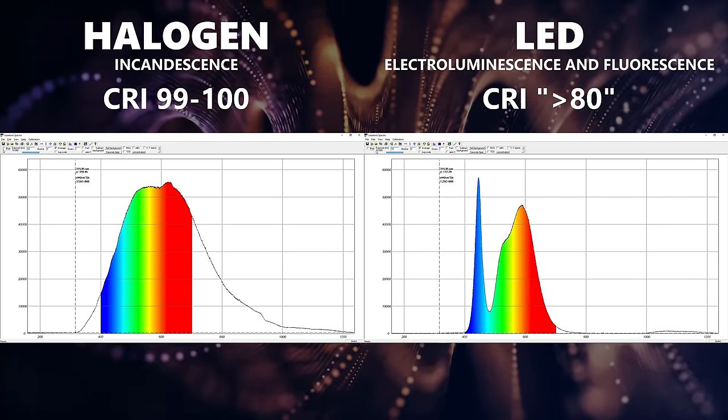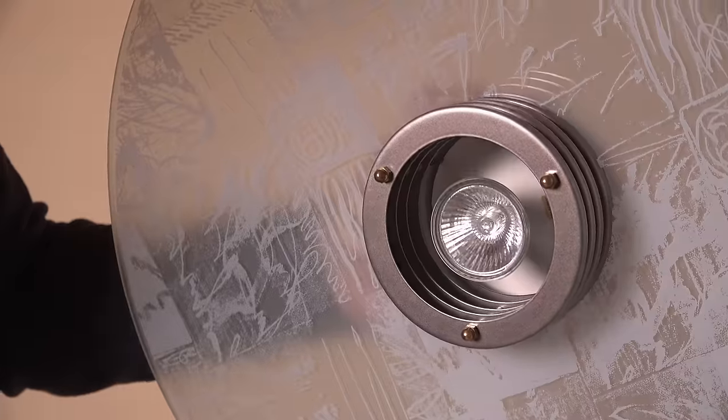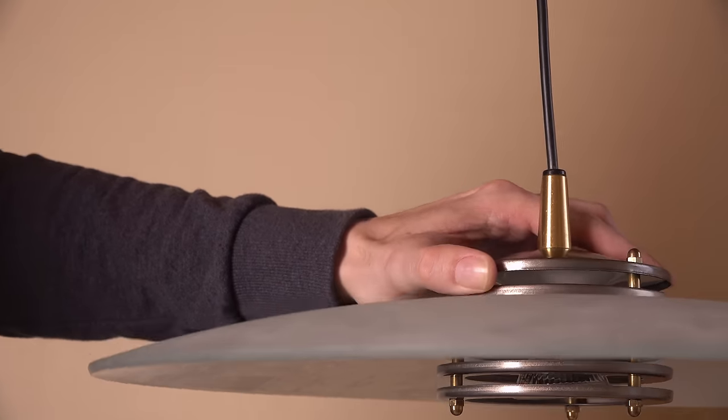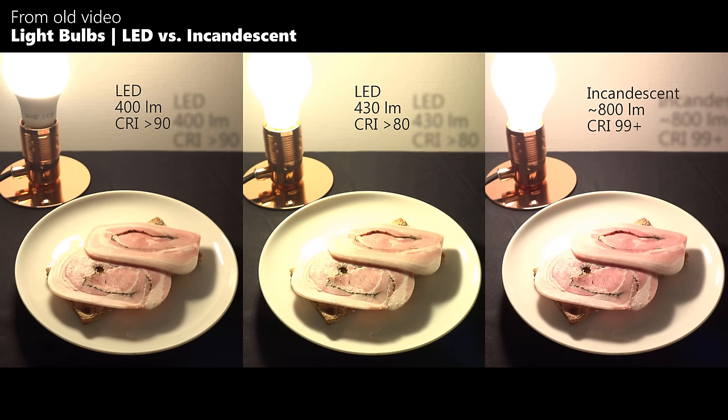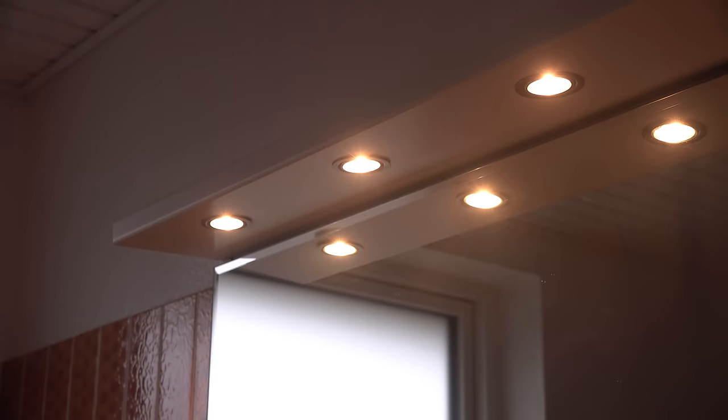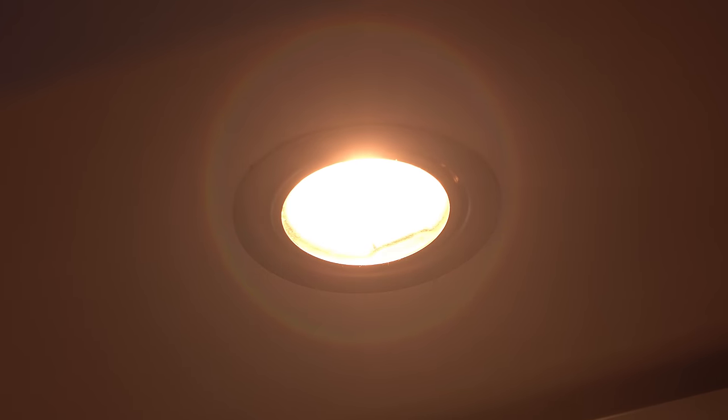The good color rendering from halogen lamps is one of the reasons I still use them in two places in my home. Above the dinner table in my kitchen, because food, especially meat, just looks more delicious under good light. And above the mirror in my bathroom, because skin looks more attractive under good light.